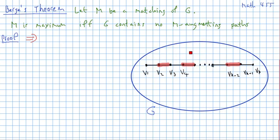Well, if there is such a path, then it has to have an odd number of edges, because you start not in the matching and you end not in the matching.